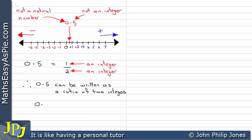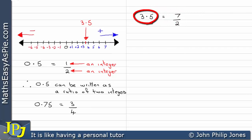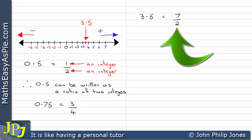We can also see that 0.75 can be written as 3 divided by 4 — again, a ratio of 2 integers. If we now take another point on the number line, we can see that it is 3.5. We can write 3.5 as a ratio of integers, i.e. 7 divided by 2, because 7 divided by 2 clearly gives us 3.5. This is a top-heavy fraction, but the point is it is a ratio of integers.